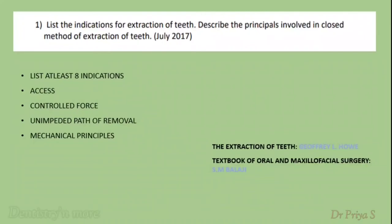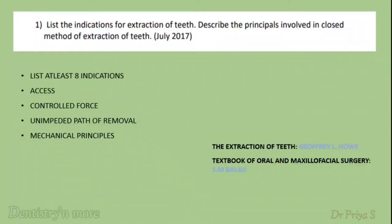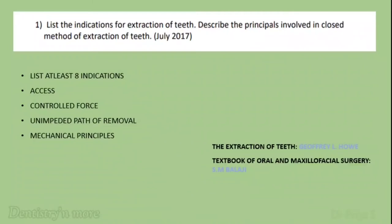List the indications for tooth extraction — you can list 8 to 10 indications. This is a direct question. In the second part, describe the principles of the closed method of extraction. Do not confuse these with the principles of elevators. The principles of closed extraction are axis of withdrawal, controlled force, and unimpeded path of removal. You can also add the mechanical principles: expansion of the tooth socket using a lever and fulcrum, and insertion of wedges, as given in the book 'The Extraction of Teeth' by Geoffrey L. Howe.